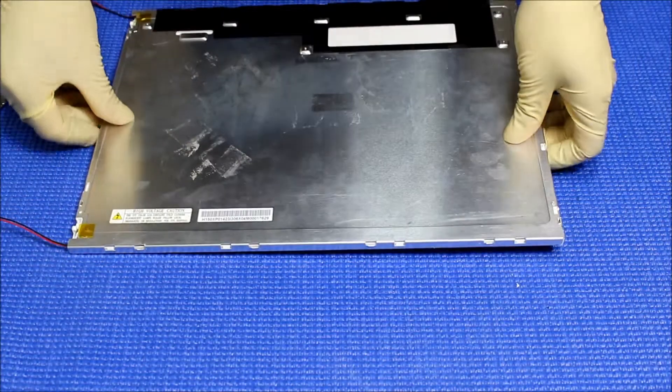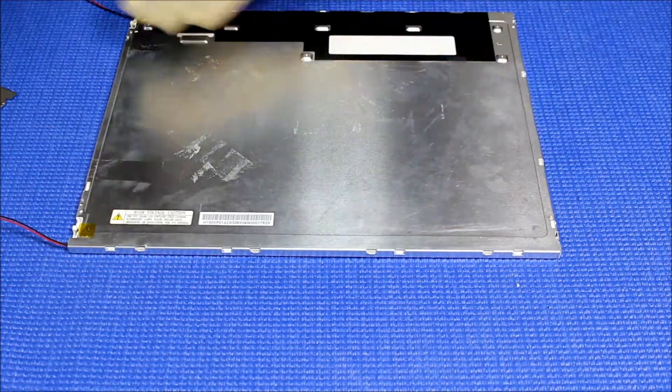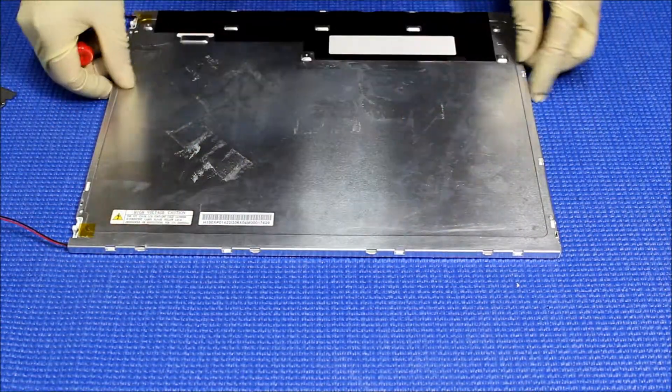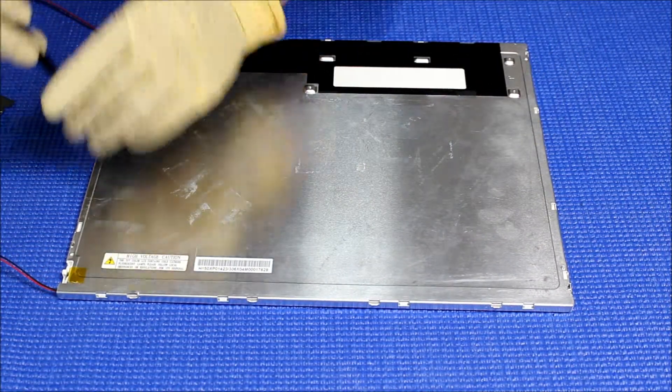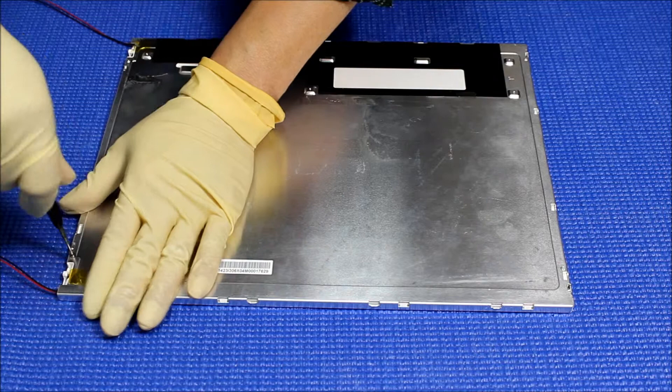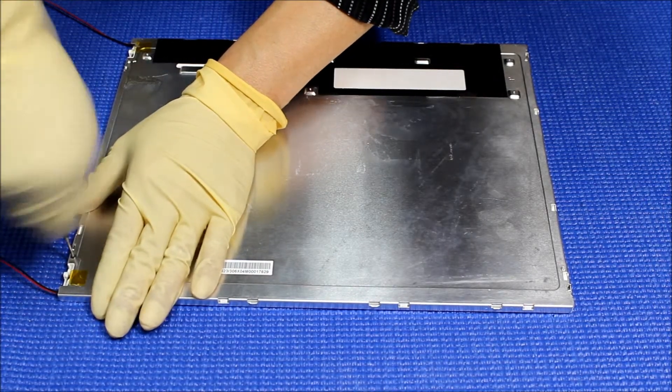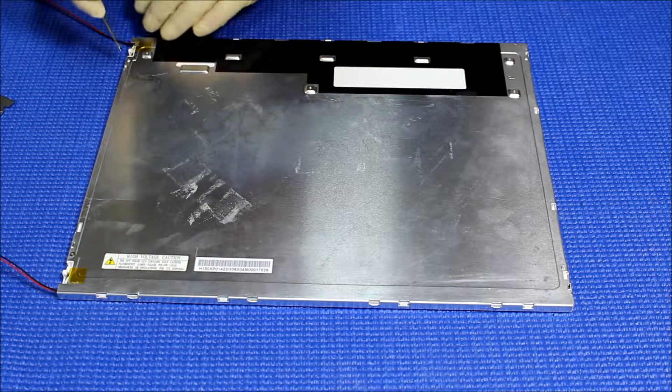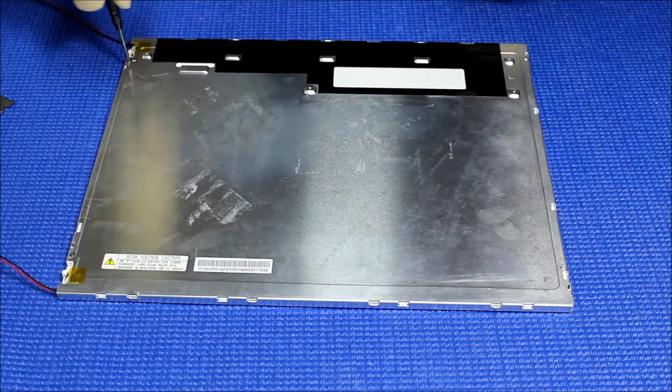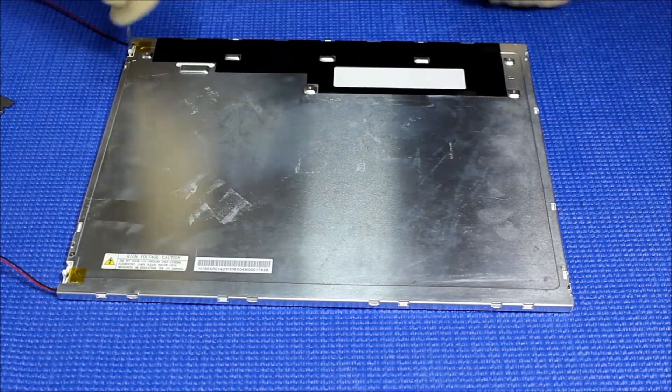Let's take a look. Perfect. Next thing we need to do is put back the screws. Remember we removed the screws, so there's four screws on each end holding the plastic. Remember we haven't put back the diffusion sheet yet, so we're gonna do it next after putting the screws on because we also have to clean the plexiglass.